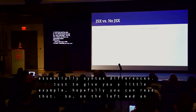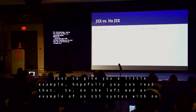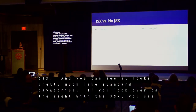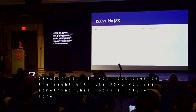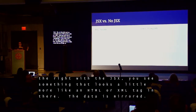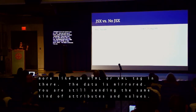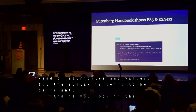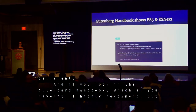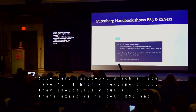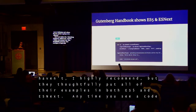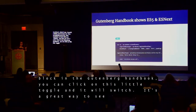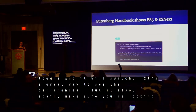Just to give you an example — on the left we have ES5 syntax with no JSX, which looks pretty much like standard JavaScript. On the right with JSX, you see something that looks more like an HTML or XML tag. You're still setting the same attributes and values, but the syntax is different. The Gutenberg handbook thoughtfully puts all examples in both ES5 and ESNext — you can click a little toggle to switch between them. Just make sure you're looking at the right example for whichever format you're using.